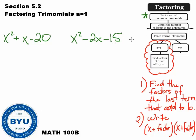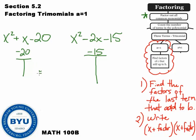So we count the terms: one, two, three terms each. That brings us to the three-term branch. We ask if the a value equals 1 — and it is just 1 in both problems. So we're ready to apply the method: find the factors of c that add to b. C in the first problem is negative 20, and c in the second problem is negative 15. B is 1 in the first problem and negative 2 in the second.